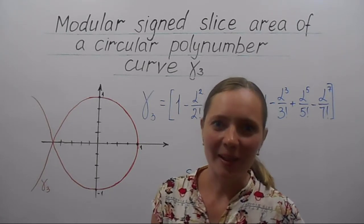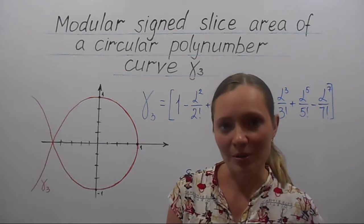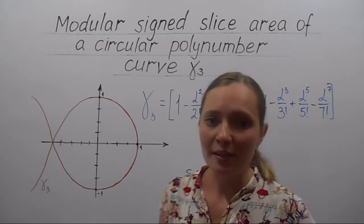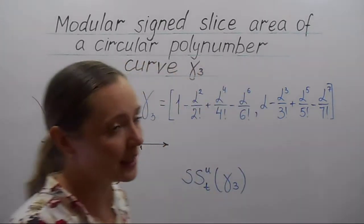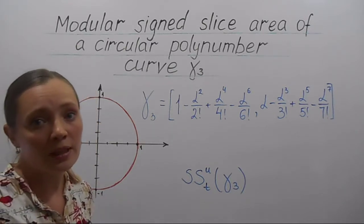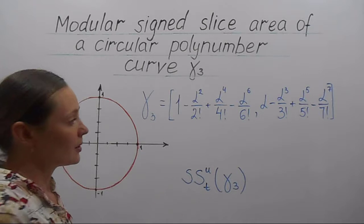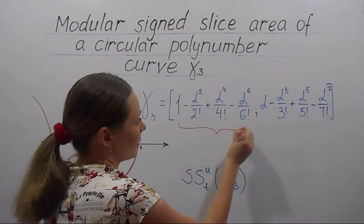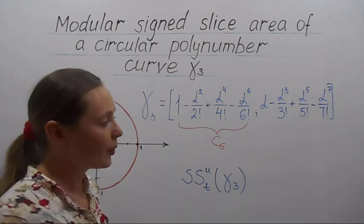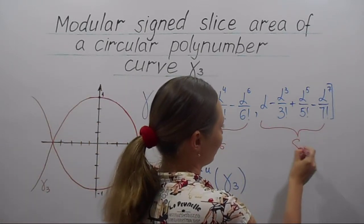Hello everyone! I am Anna Tomskova and welcome to the Algebraic Calculus course. In today's video we will see how to find the modular sine slice area of a circular polynomial curve γ3. The first component of its parametrization is the cosine polynomial C6 and the second component is the sine polynomial S7.